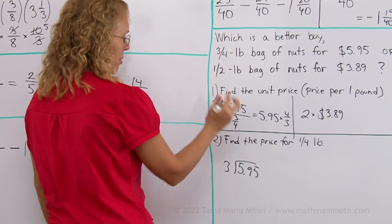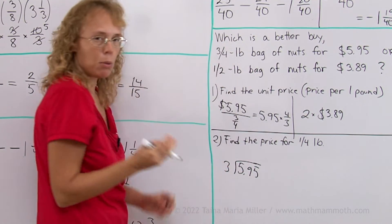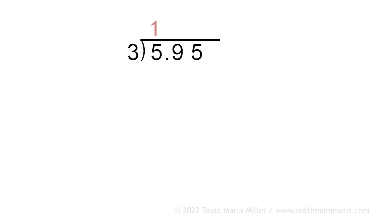This price divided by 3 will give me the price for 1/4 of a pound. 3 goes into 5 once.